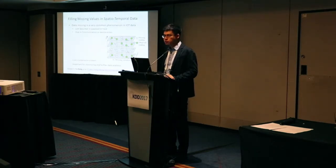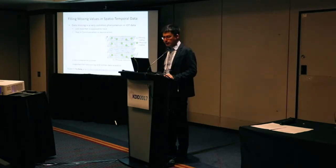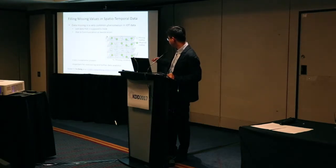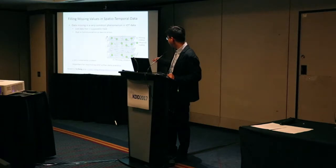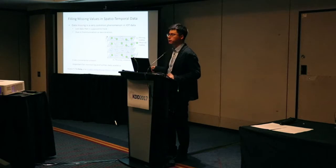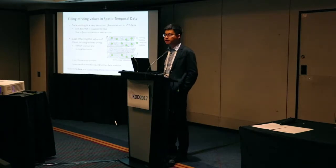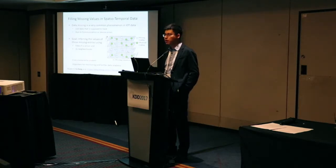We have five sensors, each supposed to generate a reading at each time stamp. But because of sensor or communication error, we may lose some readings, represented by white circles, while green circles represent received readings. This is a very common phenomenon. The first step is how to fill in the missing values so we can better monitor the entire system for later data analytics.